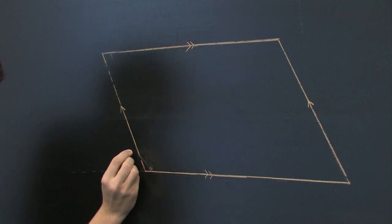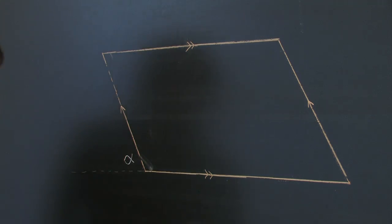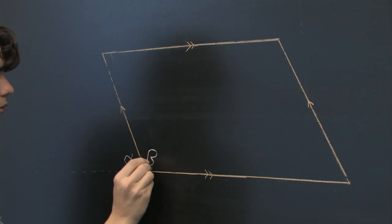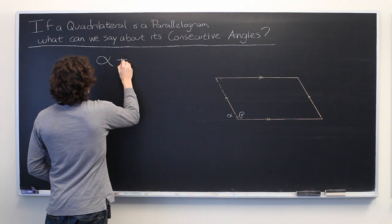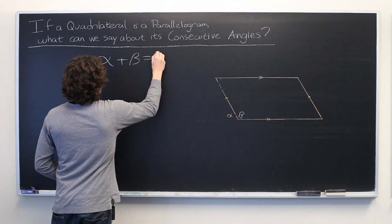So we'll go ahead and call this angle alpha and this angle beta. We know that alpha plus beta equals 180 degrees.